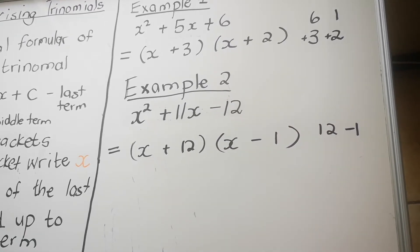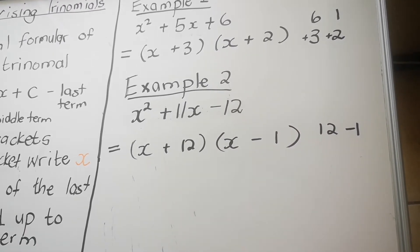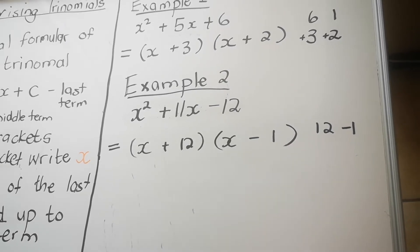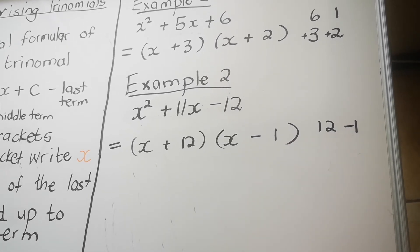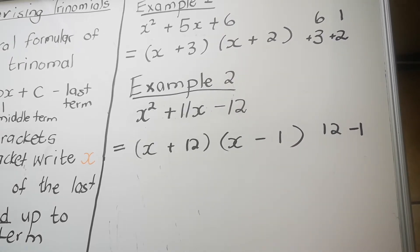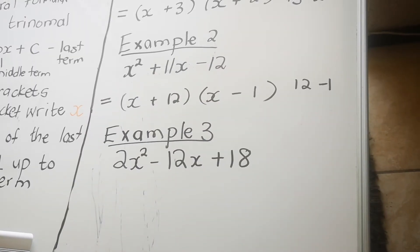So the factors are positive 12 and negative 1, giving (x + 12)(x − 1). That completes example two.